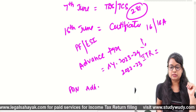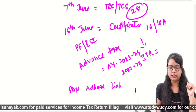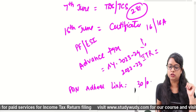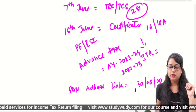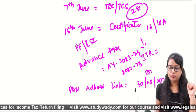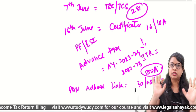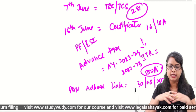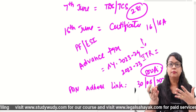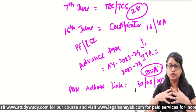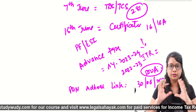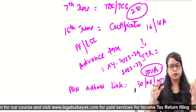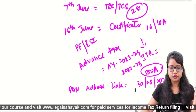If you missed PAN-Aadhaar linking by 31 March, the government has announced that you can link it until 30 June with a late fee of 500 rupees. So take this action before 30 June. For any reason if PAN data or Aadhaar data didn't match, quickly update your information. Then complete PAN-Aadhaar linking — in the portal, this option is active.